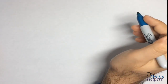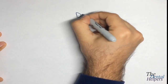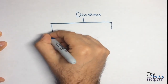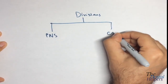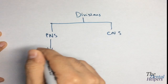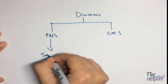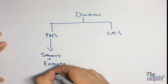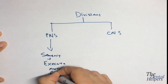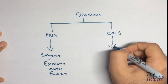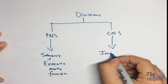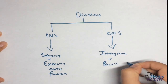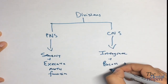Let's look at the divisions of the nervous system. We have the peripheral nervous system as well as the central nervous system. The peripheral nervous system is going to take in sensory information and also execute motor function, while the central nervous system is going to integrate the information it collects from the peripheral nervous system, process it, and initiate behavior.